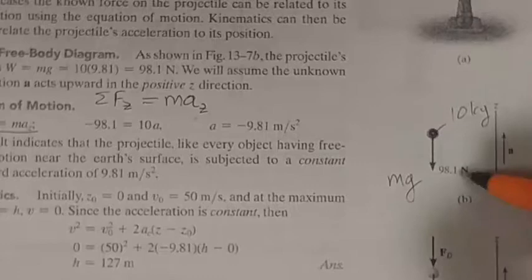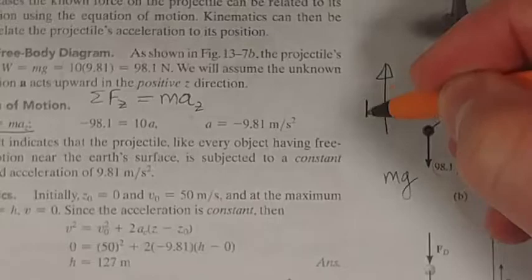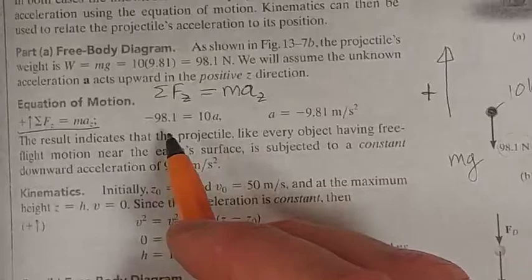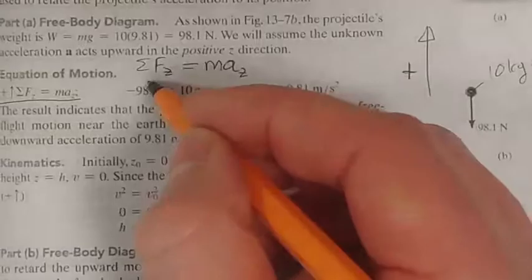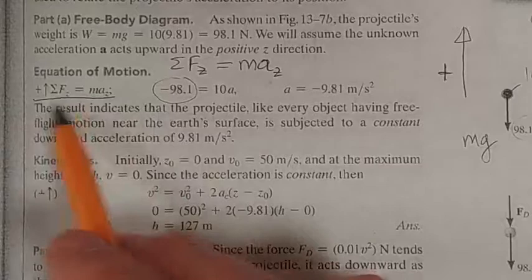What are all the forces acting on it? It is only mg here. It's only mg and it's down. So we choose up, up as positive. As you can see there, it says up is positive. So because mg is acting down, this is minus 98.1, 98.1.